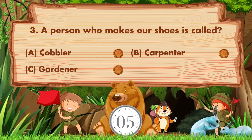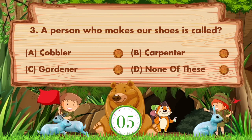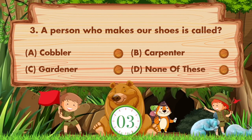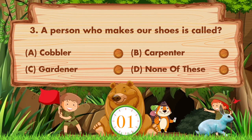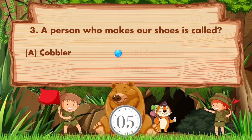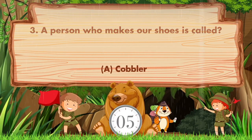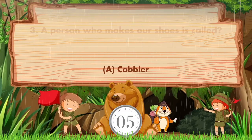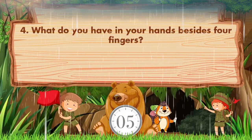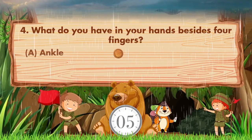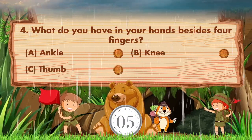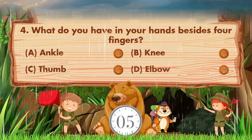A person who makes our shoes is called blank. Option A: cobbler, B: carpenter, C: gardener, D: none of these. Answer is option A, cobbler. What do you have in your hands besides four fingers? Option A: ankle, B: knee, C: thumb, D: elbow.